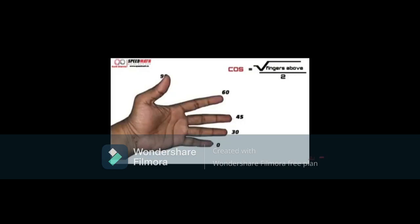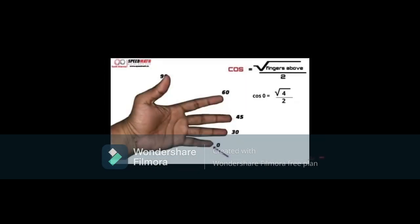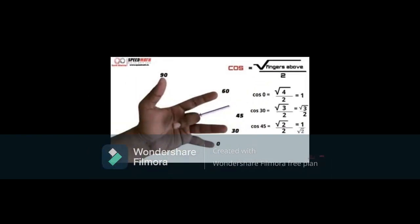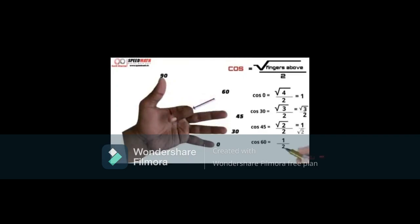Like sine for cos, the only difference is we are going to count the number of fingers above instead of counting it below. So, first, let's find cos 0. Here, the number of fingers above the little finger is 4. Then, by using the formula, cos 0 will be root 4 by 2, that is equal to 1. Now, let's find cos 30. Above the ring finger, there are 3 fingers. So, by the formula, cos 30 will be root 3 by 2. Now, let's find cos 45. So, above the middle finger, there are 2 fingers. So, cos 45 will be root 2 by 2. By rationalization, it will be 1 by root 2. Next is cos 60. Above the index finger, there is only 1 finger. So, cos 60 will be root of 1 by 2, that is equal to 1 by 2. Now, let's find cos 90. Above thumb, there is no finger. So, cos 90 will be root 0 by 2, that we can write it as 0.